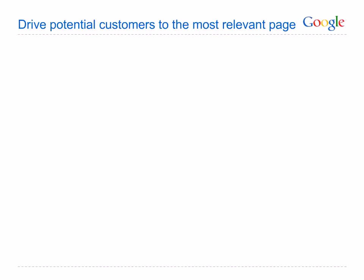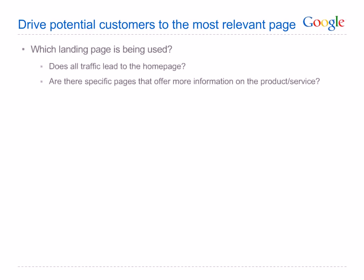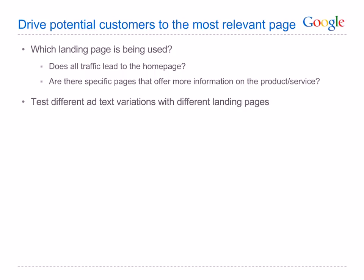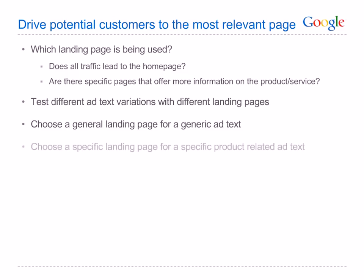The landing page that your AdWords ad leads to is an important factor. Make sure that the destination URL you use for each ad directs users to the most relevant page within your website — ideally a web page dedicated to the specific product or service highlighted in your ad. Think about whether you want all traffic to lead to the home page or whether there are specific pages that correspond to the products you're advertising. Consider using multiple ad text variations within the same ad group to test different landing pages. If your ad group is generic, test a more generic page; if the text is specific to a product, direct the user to that specific page. It's often easier for a user to get from a specific landing page to a more general one than from your home page to the specific product page.